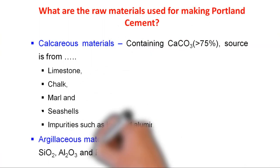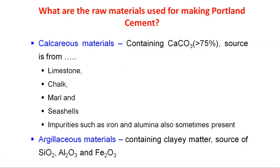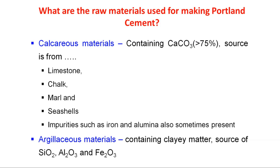Next, let's see what raw materials are used for manufacturing Portland cement. The major raw material is calcareous material, which is calcium carbonate, comprising more than 75 percent. The major sources of calcium carbonate are limestone, chalk, marl, and even sea shells. These materials contain some contaminants such as iron and alumina.